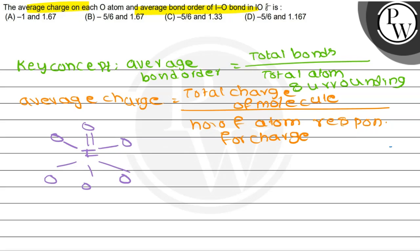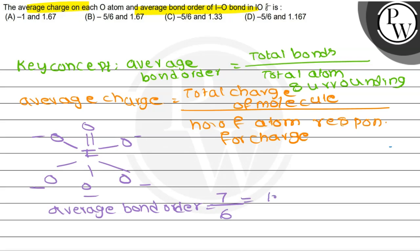On each O, the negative charge is present. Totally on 5 O atoms, the negative charge is present. The total number of bonds is 7, divided by total atoms surrounding, which is 6. Calculating this gives an average bond order of 1.167.